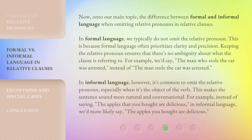Now, on to our main topic: the difference between formal and informal language when omitting relative pronouns in relative clauses. In formal language, we typically do not omit the relative pronoun. This is because formal language often prioritizes clarity and precision — keeping the relative pronoun ensures there's no ambiguity about what the clause is referring to. For example, we'd say 'the man who stole the car was arrested,' instead of 'the man stole the car was arrested.'